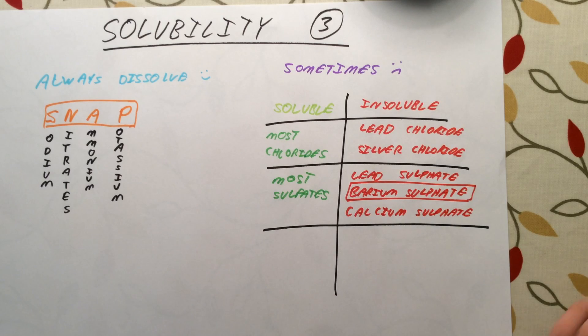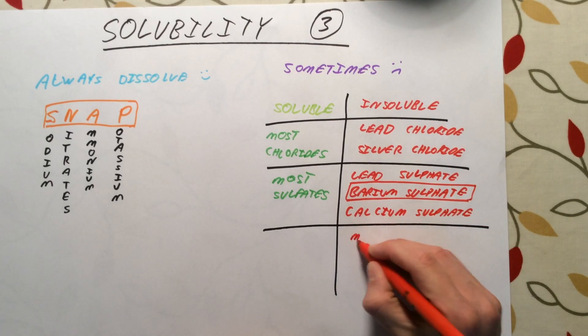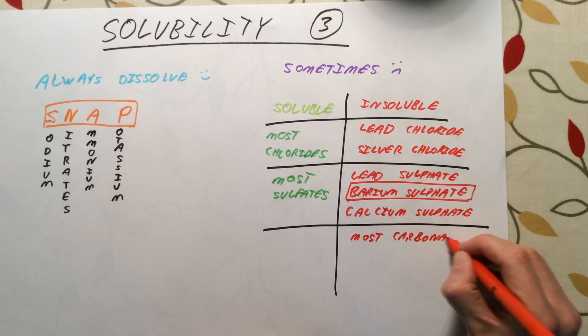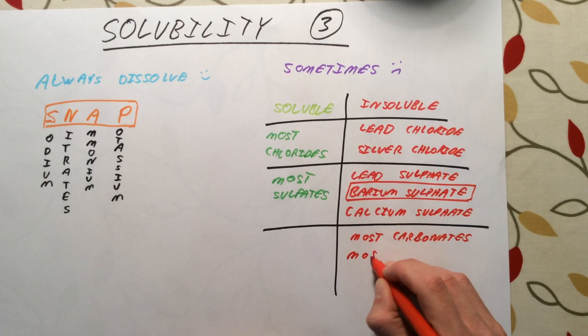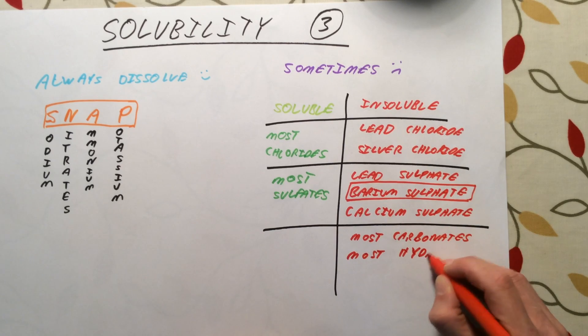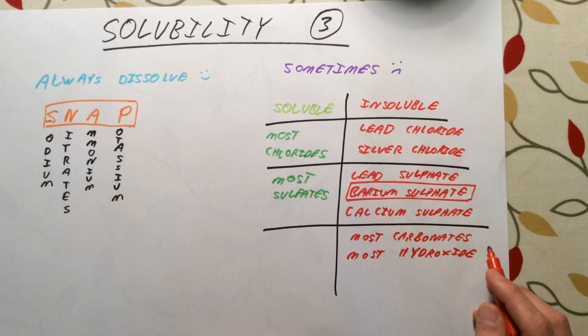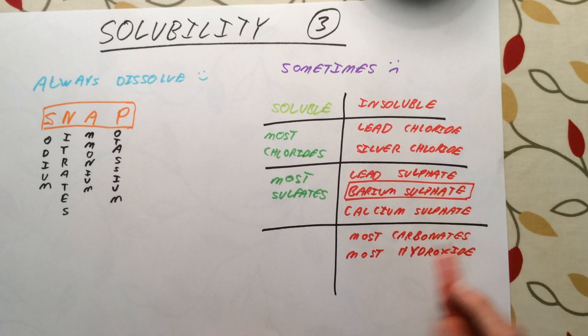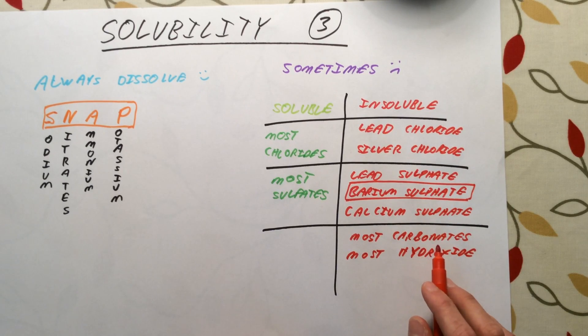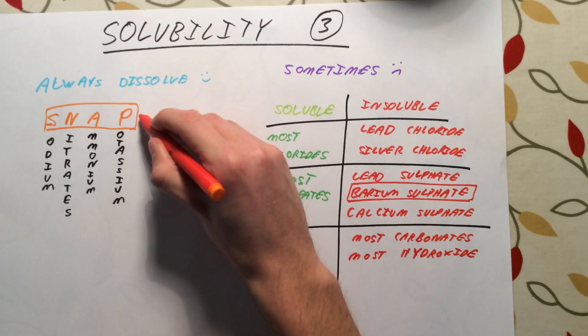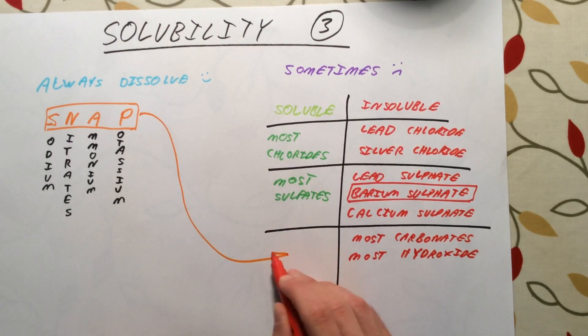There are two examples we need to know about of salts which are generally insoluble. Most carbonates and most hydroxide salts do not dissolve in water. So calcium carbonate, for example, does not dissolve in water. The exceptions to this rule, you don't actually need to learn them any differently to what we had before, because the exceptions just come from our SNAP rule here.